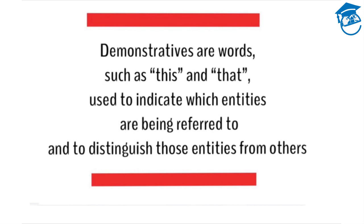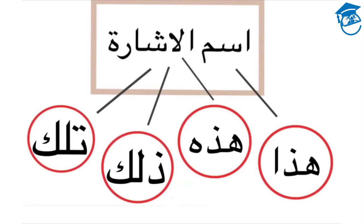So what are demonstrative pronouns? Demonstratives are words such as 'this' and 'that' used to indicate which entities are being referred to and to distinguish those entities from others. In the Arabic language, the word we use for demonstrative pronoun is ism el-ishara.